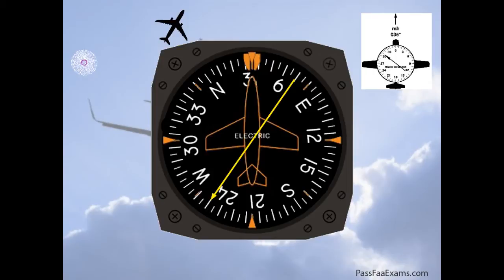And being that this instrument is now an RMI, the tail points directly to the bearing from the station. So there you have it, 070 is the correct answer.